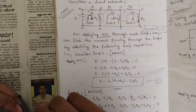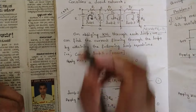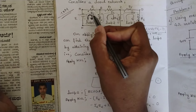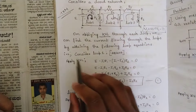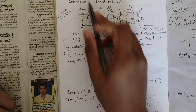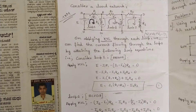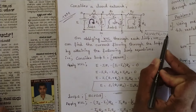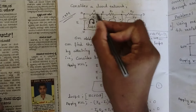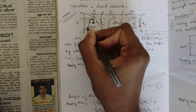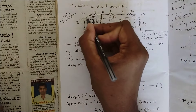Since we have three loops, we should find three currents: I1 for loop 1, I2 for loop 2, I3 for loop 3. Now consider loop 1 — path A-B-G-H-A. When applying KVL, the equation is V1 + V2 + V3 = 0. Whenever we apply KVL, we should consider the outward signs of all the components — the voltage source and resistors.